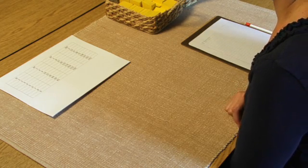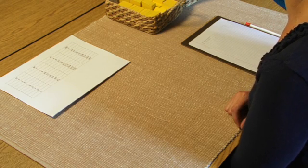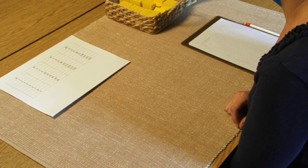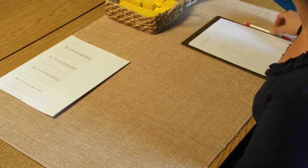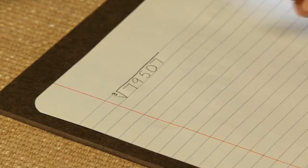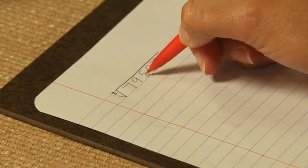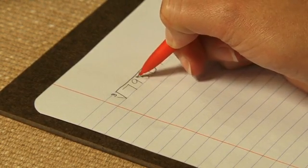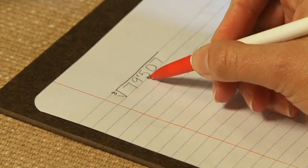We are going to find the cube root of 79,507. And the first thing that we're going to do is find out how many periods we'll be working with. We're going to count over three digits, and we'll mark that with a tick, so we know that our answer will have two digits today.